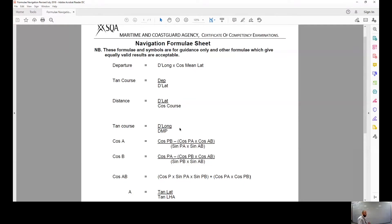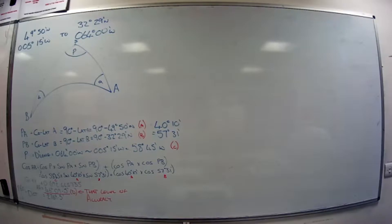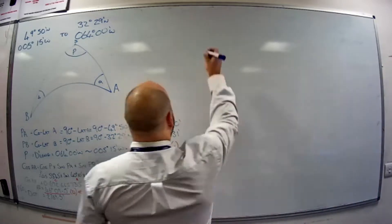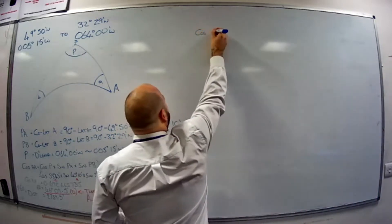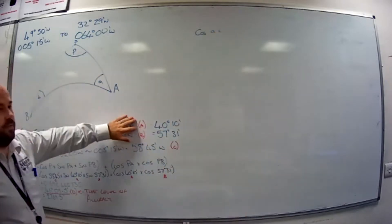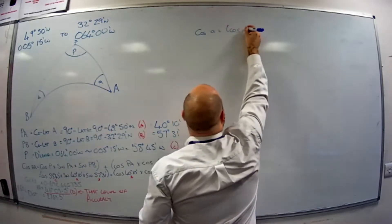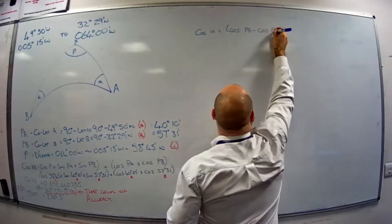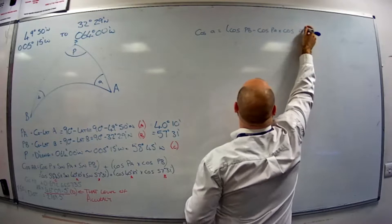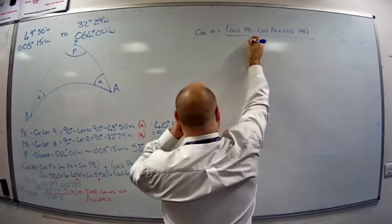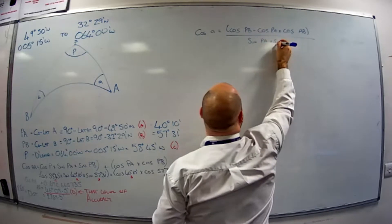All they've done is transpose the cosine formula to find A or find B. You can see there: cos A equals cos PB minus cos PA times cos AB, divided by sine PA times sine AB; or cos PA minus cos PB times cos AB divided by sine PA times sine AB. Those formulae are given to you in the SQA and all your internal exams at the college. So I call it 'little A' rather than A just to differentiate it.